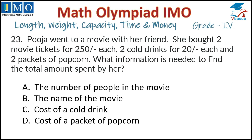Question 23: Pooja went to a movie with her friend. She bought 2 movie tickets for ₹250 each, 2 cold drinks for ₹20 each, and 2 packets of popcorn — but the price of popcorn is not given. What information is needed to find the total amount spent? The cost of the cold drink is already given. The cost of a packet of popcorn is missing. So option D is correct. Tick option D.